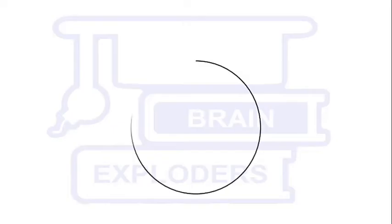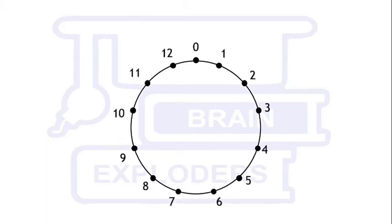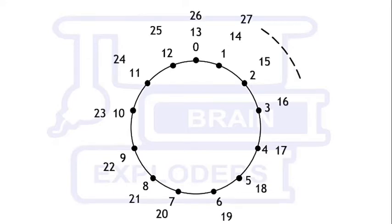Take 13 points on a circle. Start from 0 and write numbers on all these points. After 12, again start writing the numbers from 13 to 25 and keep going on.